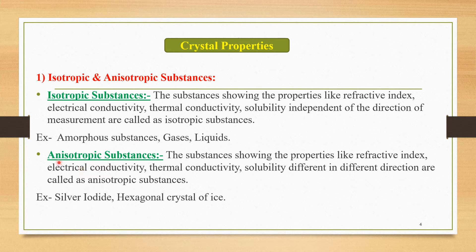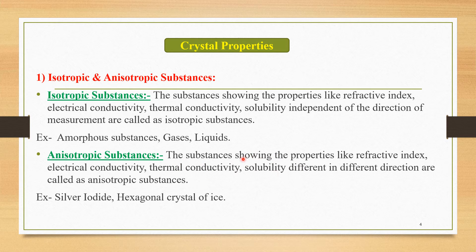Anisotropic substances show properties like refractive index, electrical conductivity, thermal conductivity, and solubility that are different in different directions — these properties are direction-dependent. If we change the direction of measurement, we get different results. Important examples are silver iodide and the hexagonal crystal of ice.